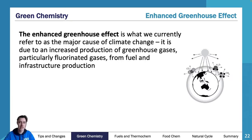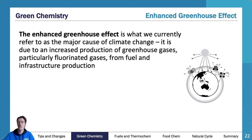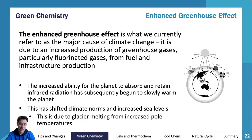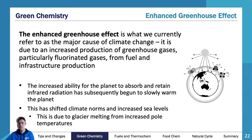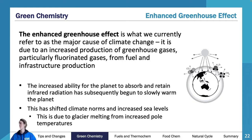The enhanced greenhouse effect is what we currently refer to as the major cause of climate change — it is due to an increased proportion of greenhouse gases, particularly fluorinated gases from fuel and infrastructure production. The increased ability for the planet to absorb and retain infrared radiation has slowly begun to warm the planet. This has shifted climate norms and increased sea levels due to glacier melting from increased pole temperatures. You need to explain this from a chemical point of view — what are the greenhouse gases, and this is where green chemistry comes in: what if we can minimize greenhouse gases in our production?